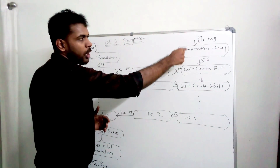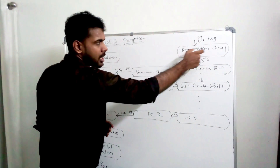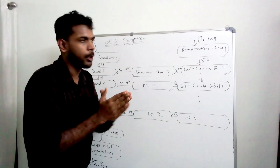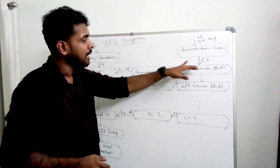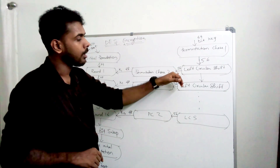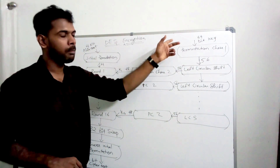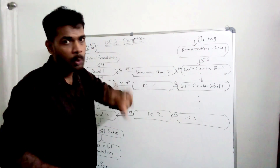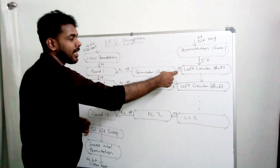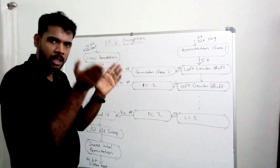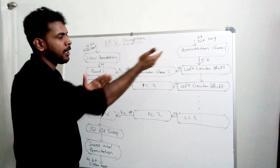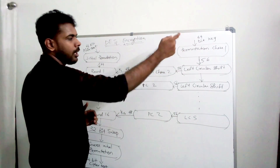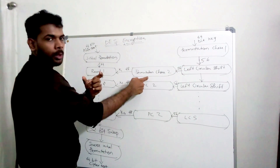We apply a left circular shift on the 56 bits. First, permutation choice 1 (PC1) is applied, then a left circular shift, and then permutation choice 2 (PC2). There are two permutation choices: PC1 with a left circular shift, and PC2 which gives a 48-bit output.